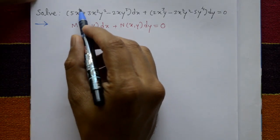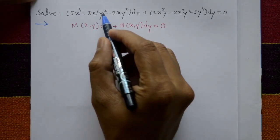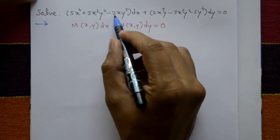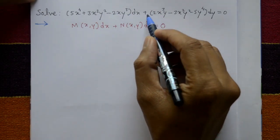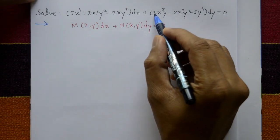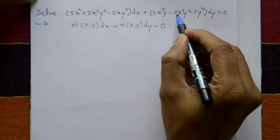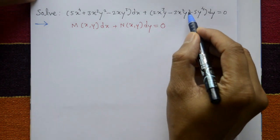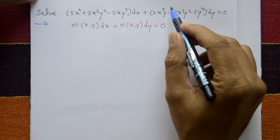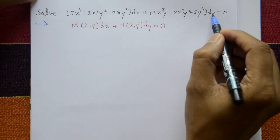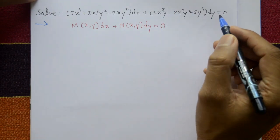Solve (5x⁴ + 3x²y² - 2xy³)dx plus (2x³y - 3x²y² - 5y⁴)dy equal to 0. Find the solution.